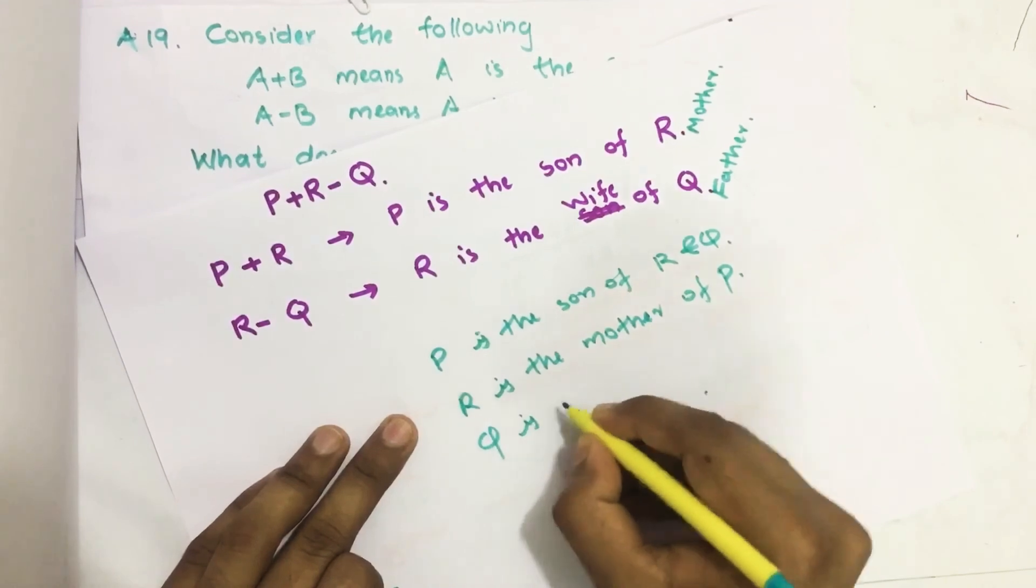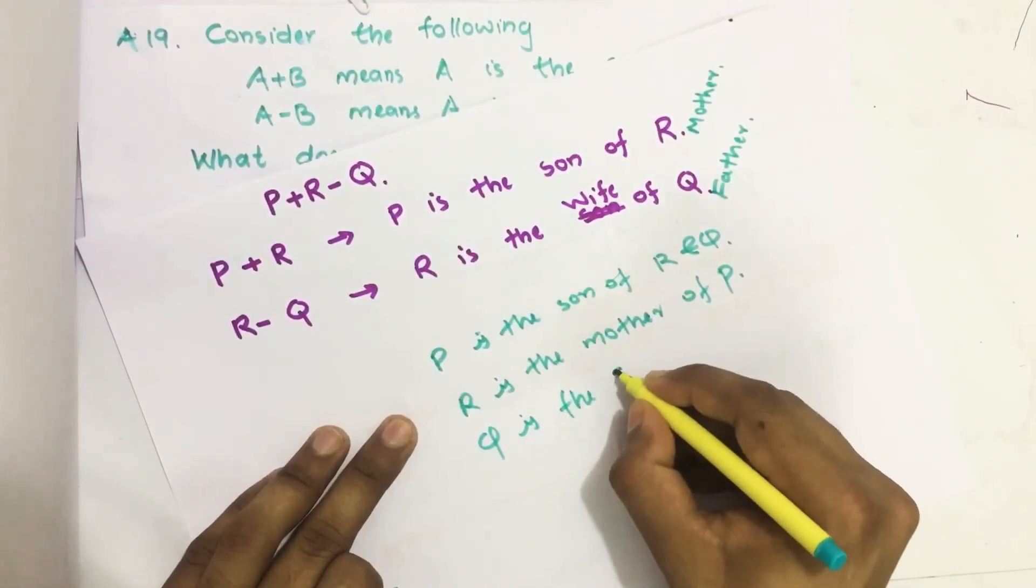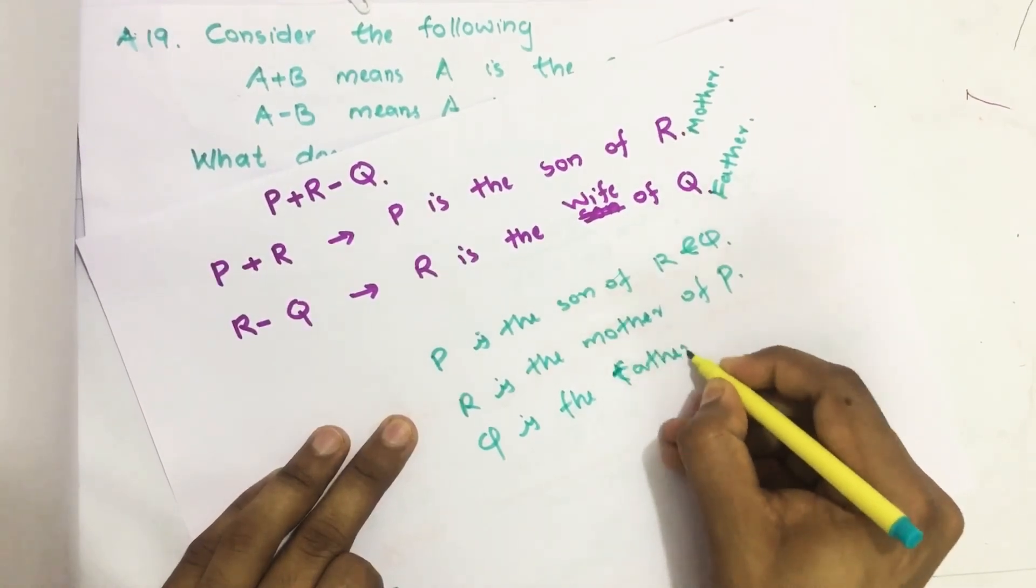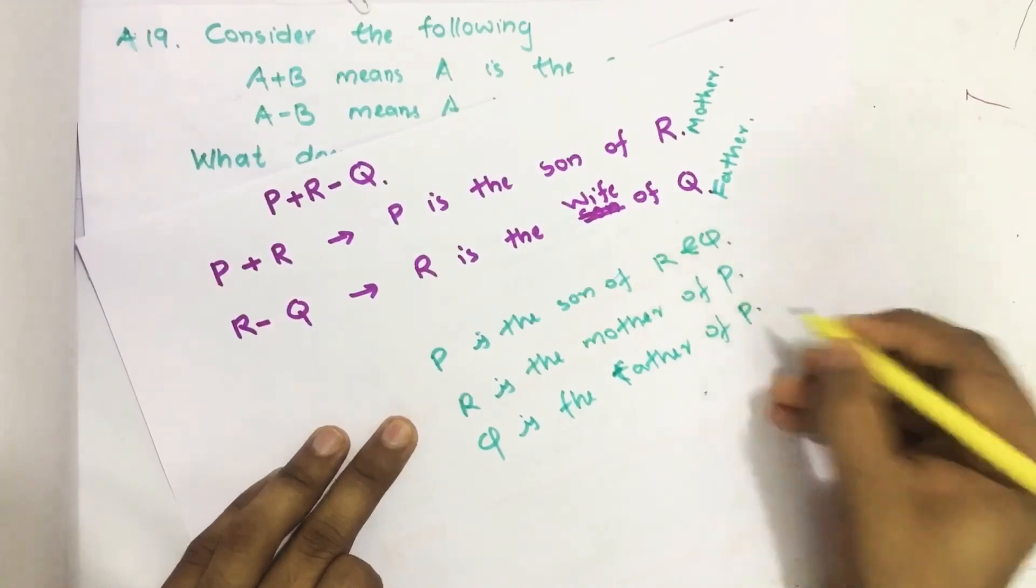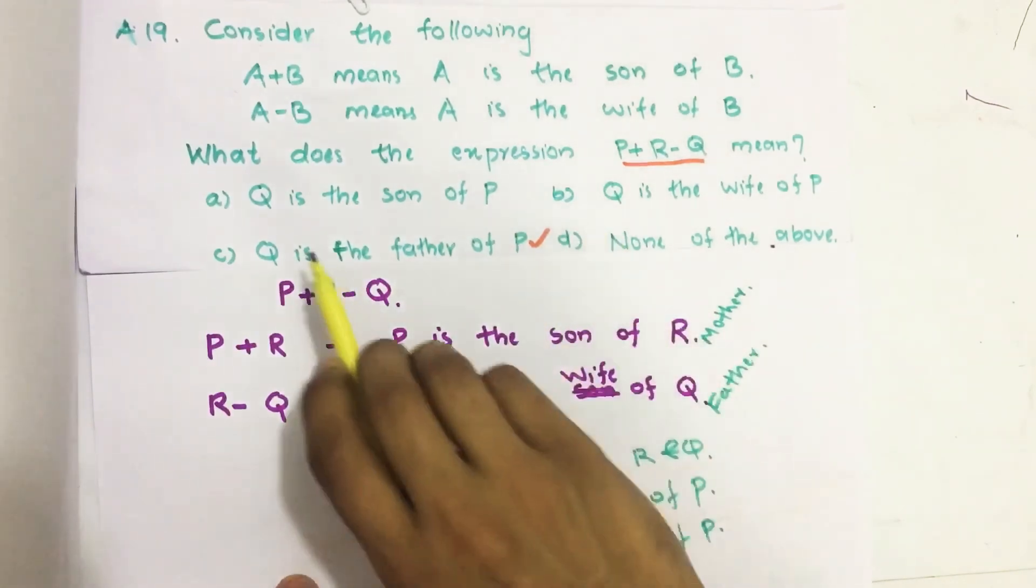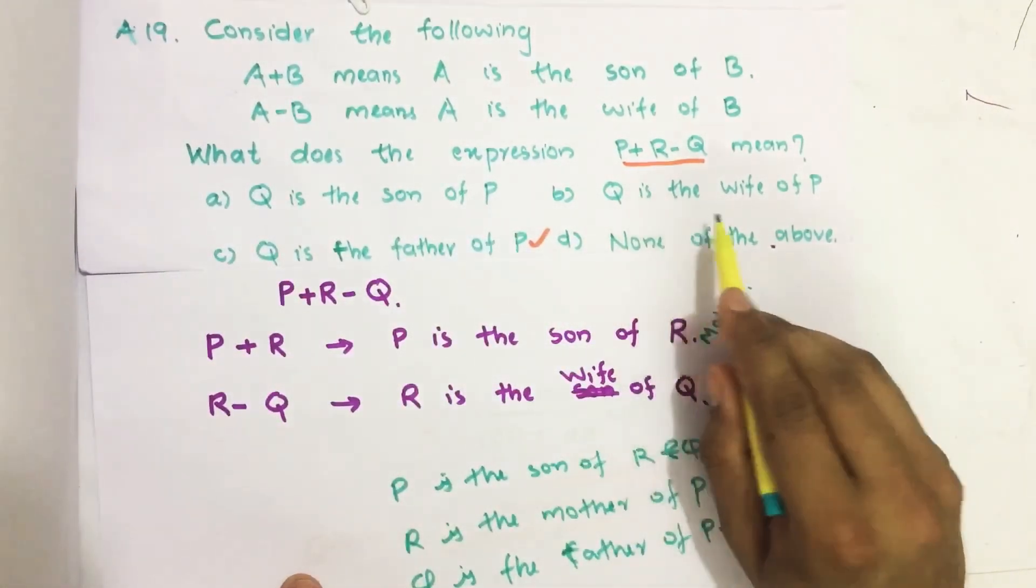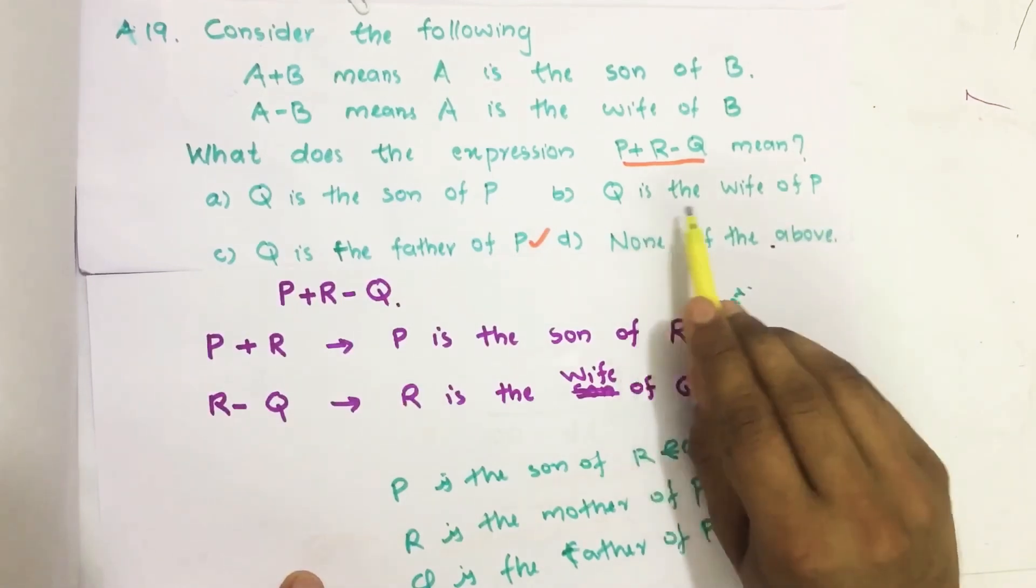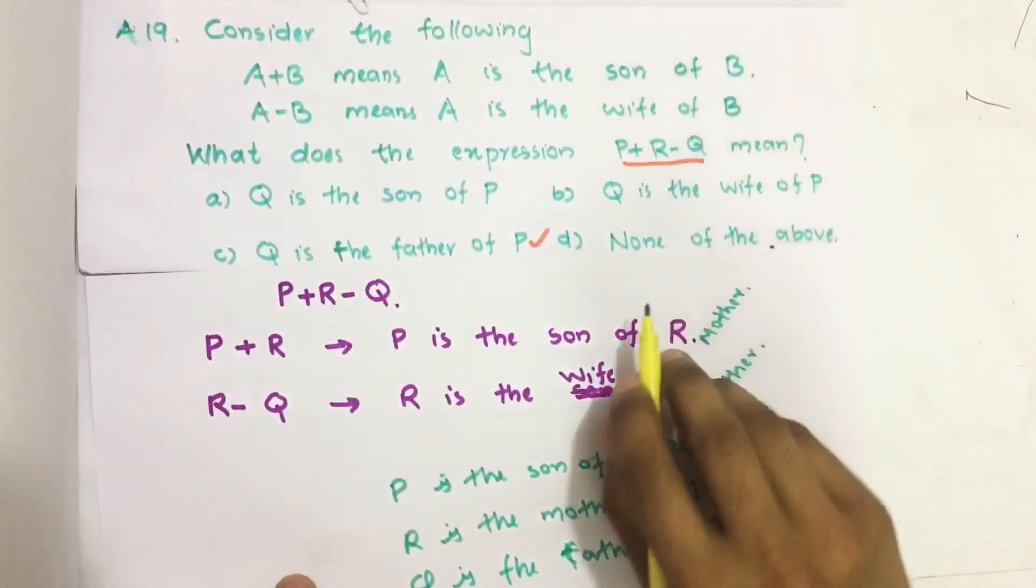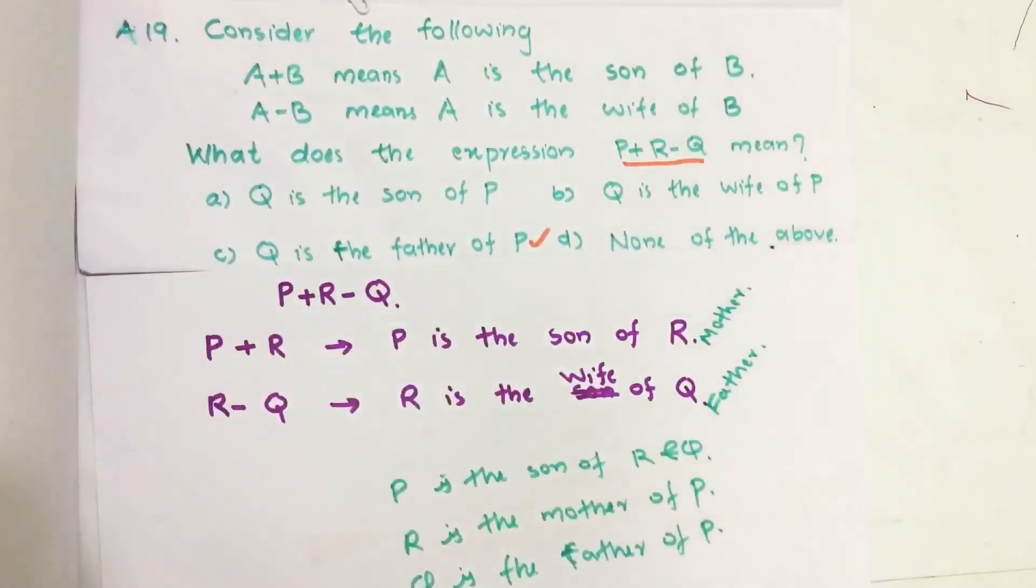Now let us see the options. Q is the son of P? No, Q is the father of P. Q is the wife of P? No, Q is the father of P. Q is the father of P? Yes, this is right. We have one option right. This is our answer, option C.